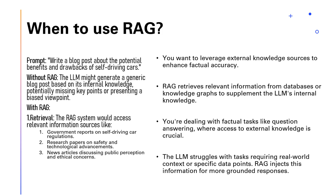One of the most important questions in prompt engineering is when to use RAG. RAG is the de facto choice when you want to leverage external knowledge sources to enhance factual accuracy, supplement the LLM's internal knowledge with structured information from databases or knowledge graphs, or handle factual tasks like question answering where access to external knowledge is crucial. In summary, when LLMs struggle with tasks requiring real-world context or specific data points, RAG injects that information for more grounded responses.